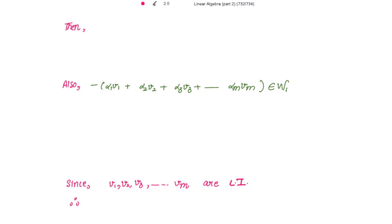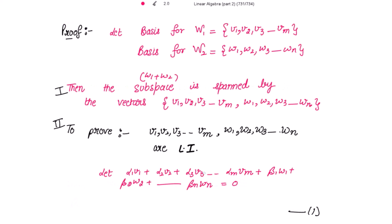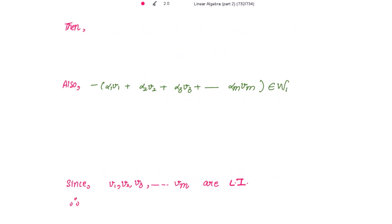Now taking the alpha terms to the other side with a negative sign: negative of (alpha1*v1 + alpha2*v2 + alpha3*v3 + ... + alpha_m*vm) equals beta1*w1 + beta2*w2 + ... + beta_n*wn.